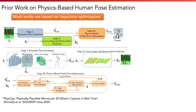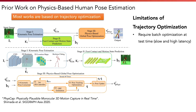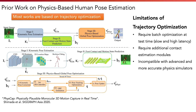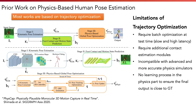To address this, prior work has used physics-based trajectory optimization for human pose estimation. However, there are several limitations with this method. First, they require batch optimization at test time, which can be slow and have high latency. Second, they require additional contact estimation modules, which can be error-prone. The optimization is also not compatible with advanced physics simulators. Finally, there is no learning process in the physics reasoning part to ensure that the final output is close to the ground truth.